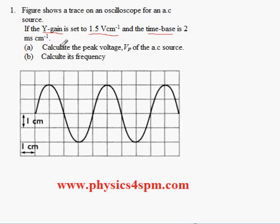The first question asks how to calculate the peak voltage of the AC source. What is peak voltage? From this waveform, we know that one box is equivalent to one centimeter, and the question states that the Y gain is set to 1.5 volts per centimeter.